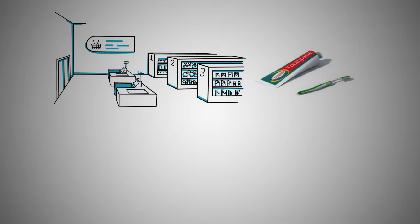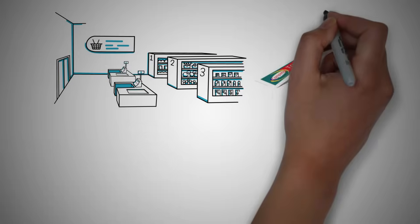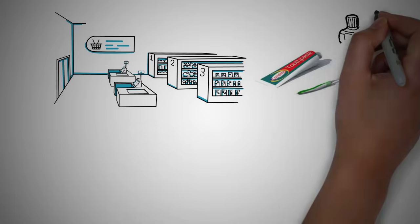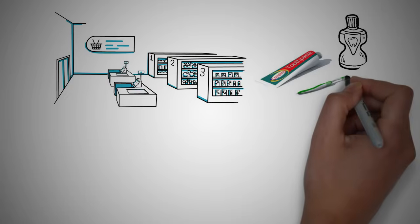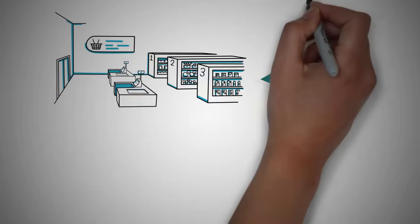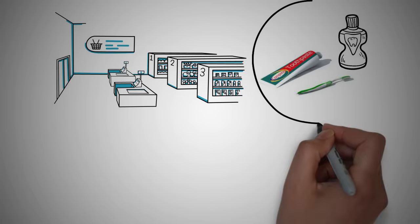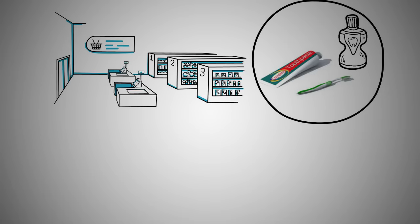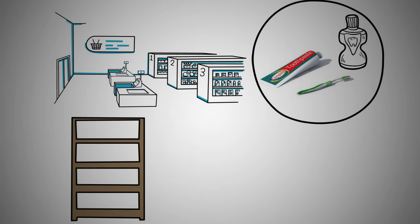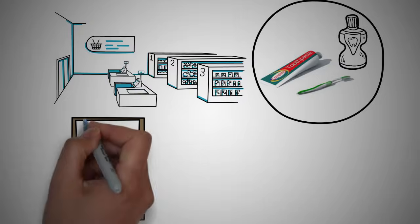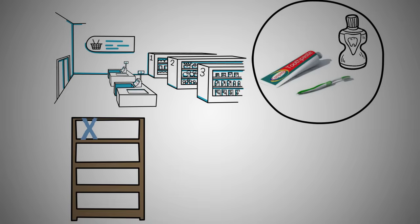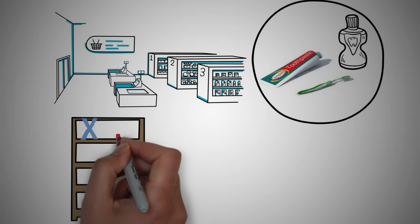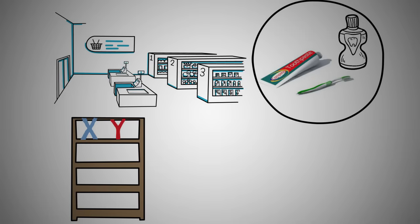For example, I would want a toothbrush, toothpaste, mouthwash, and other dental products on a single aisle. This is done in a way in which we find associations between items. Both X and Y products can be placed on the same shelf so that buyers of one item would be promoted to buy the other.